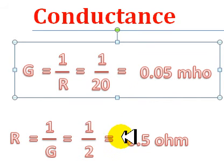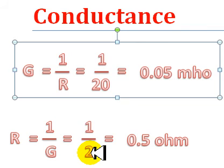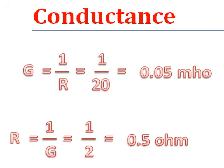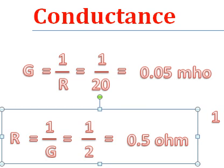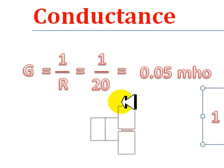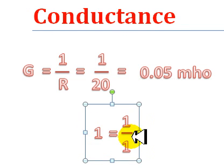Conversely, if resistance is smaller, conductance is larger. This is a standard formula, and this is why: 1 divided by 1 equals 1, and 1 times 1 is 1. So if one goes up, the other one goes down. If this one goes down, this goes up. Simple as that.